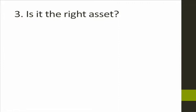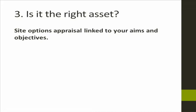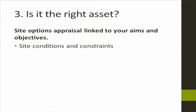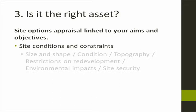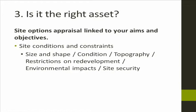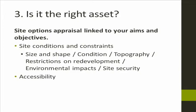Number three: do you have the right asset? You've gathered all your information, you know what you want to do, and you know that you have support. So you do have to find out if the asset is the right asset for what you want to do. You need to do an options appraisal linked to your aims and objectives. There are quite a few things to think about — identify what information already exists, and also find out what you need professionals to help you determine.